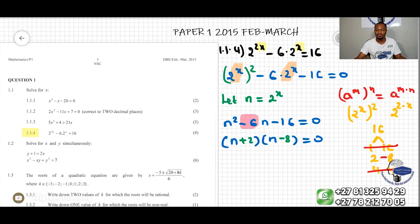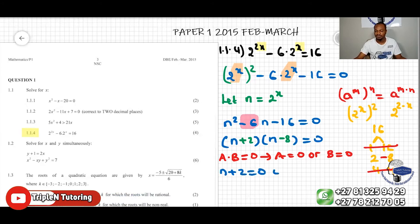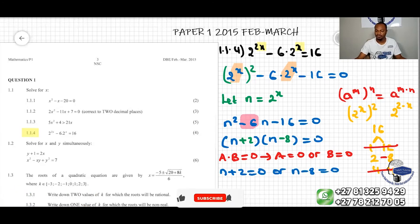Now we do know that there's this property: when we have a times b equal 0, this implies a equal to 0 or b equal to 0. So this will be n plus 2 equal to 0, or n minus 8 equal to 0. And then we can work it out when we say n equal to negative 2, or n equal to 8.